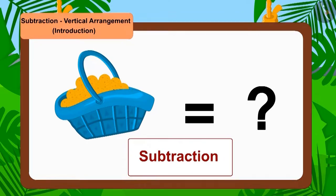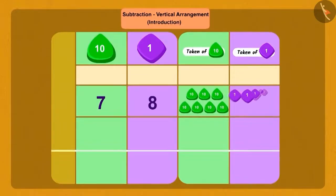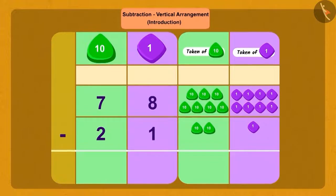So children, what will we do first? Yes, first we will arrange both the numbers as tens and ones. Now from 8 ones of 78, we will subtract 1 one of 21. We are left with 7 ones.